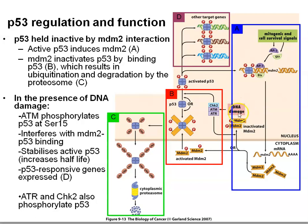DNA damage — typically double-strand and single-strand DNA breaks, but can be other forms — activates these kinase enzymes: CHK2, ATM (ataxia-telangiectasia mutated), and ATR (ATM-related). These kinases phosphorylate p53.